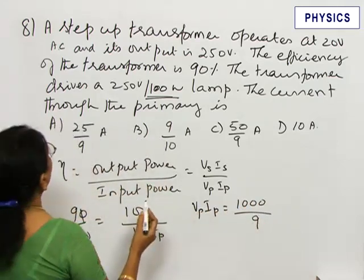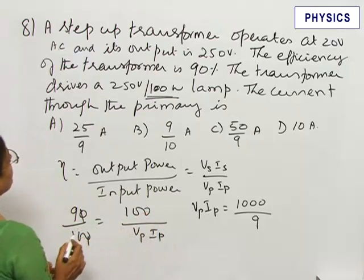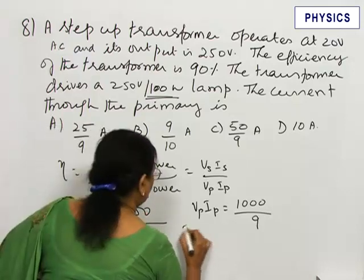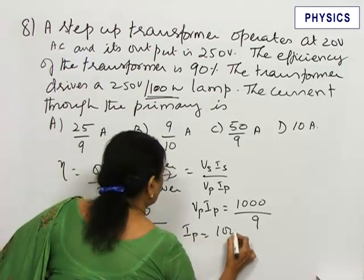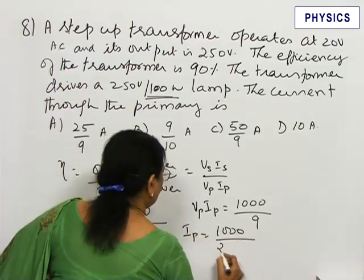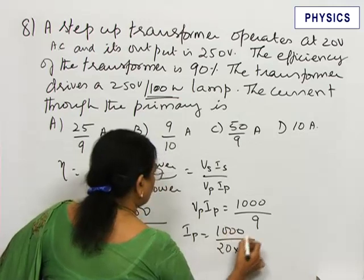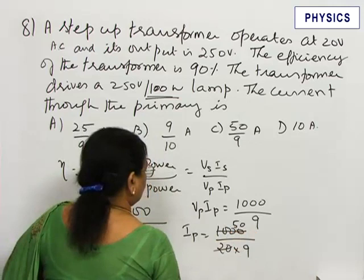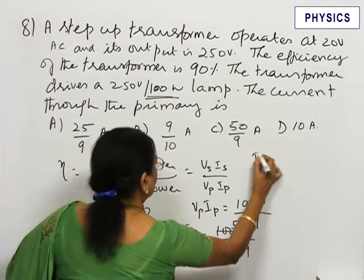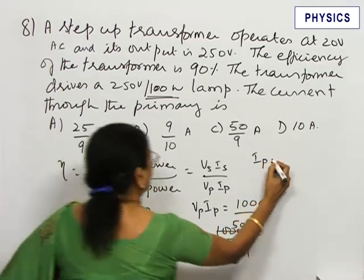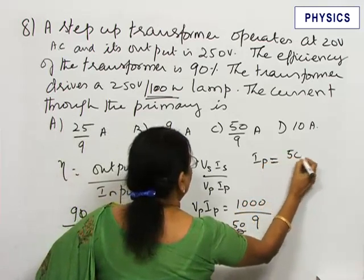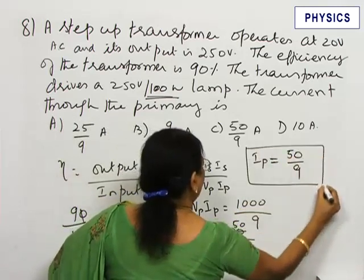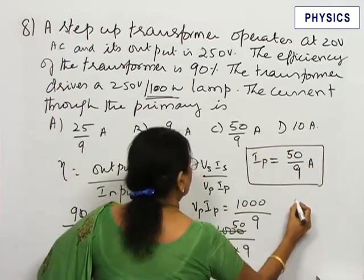Now, Vp equals 20 volts. So, Ip equals 1000 by 9 divided by 20. This gives you 50 by 9. The primary current is equal to 50 by 9 ampere. Correct option is C.